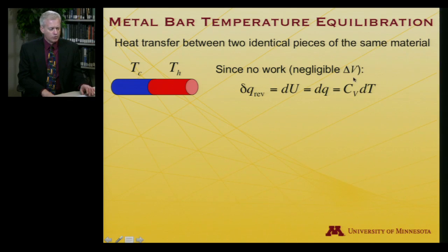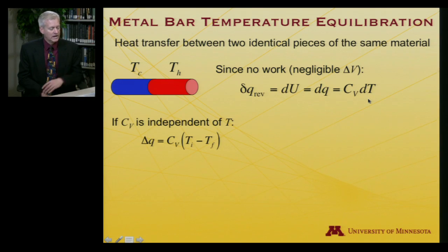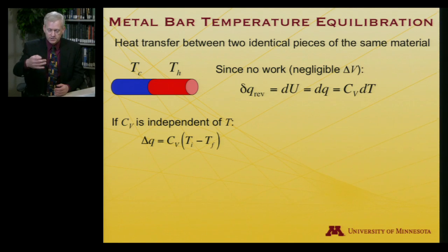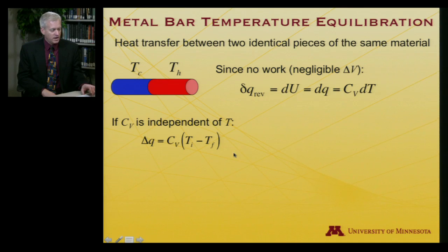There will be almost no change in the volume of these bars as long as I don't have thousands of degree changes. So the work change is negligible because delta V is negligible. And so the reversible heat change is equal to dU. It's equal to just dQ because given no work, Q becomes a state function. We can talk about reversible or irreversible, it doesn't matter. There's no work, so you don't have to worry about a path for Q anymore. And it's equal to the heat capacity times dT. So if, just to make the math a little bit more convenient here, let's assume that the heat capacity over the temperature range we're interested in is independent of temperature. It takes the same amount of heat to go up one degree, the next degree, the next degree after that. It's just a constant heat capacity.